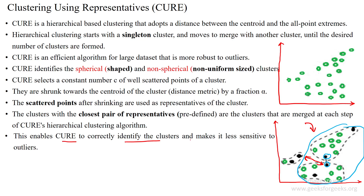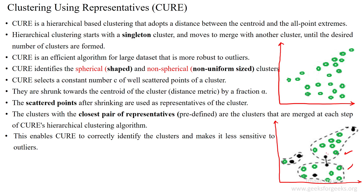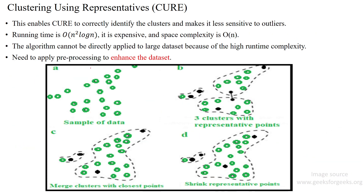The CURE algorithm is able to identify clusters and make them less sensitive to outliers. After merging the two clusters using the reference points, a data point will be assumed as an outlier because there is no close minimum distance between those two reference points. The running time for this algorithm is O(n² log n) because we are checking each and every data point in the given dataset for distance calculation, which is very expensive.